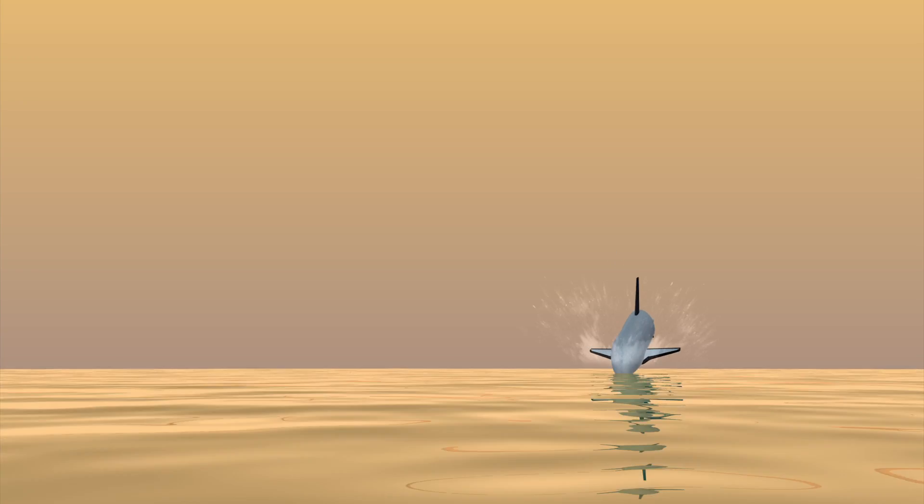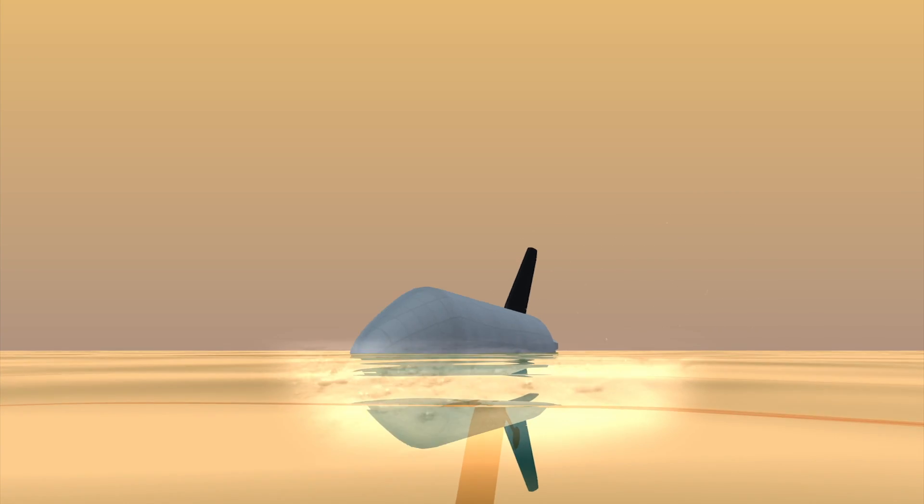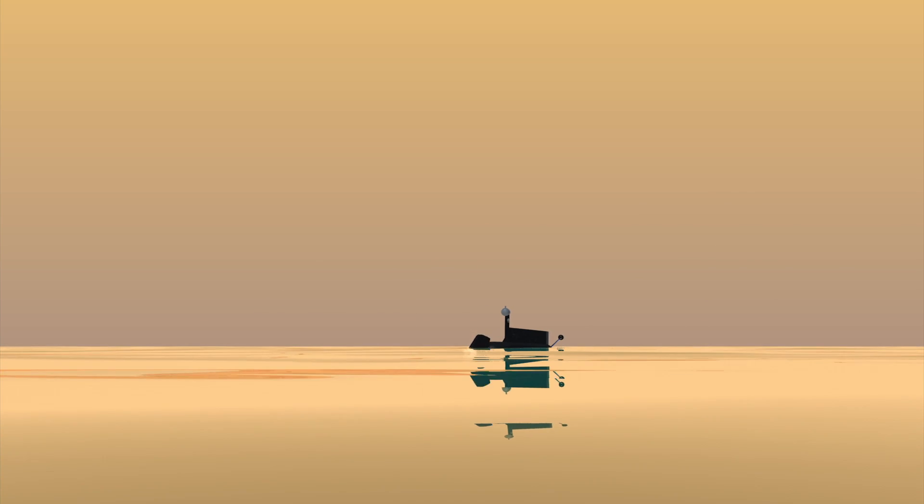The spacecraft would decelerate on contact with Titan's dense atmosphere and glide into the sea where the sub would be ejected from the spacecraft.